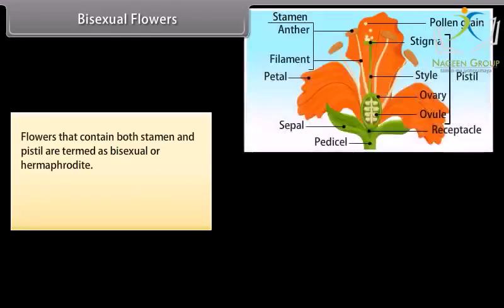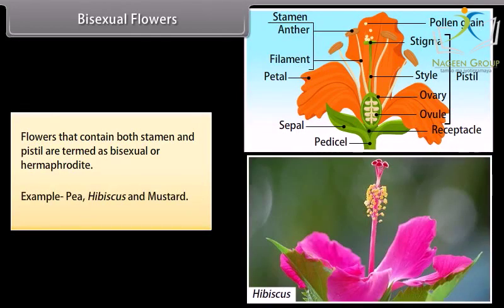Bisexual flowers. Flowers that contain both stamen and pistil are termed as bisexual or hermaphrodite. Example: pea, hibiscus and mustard.